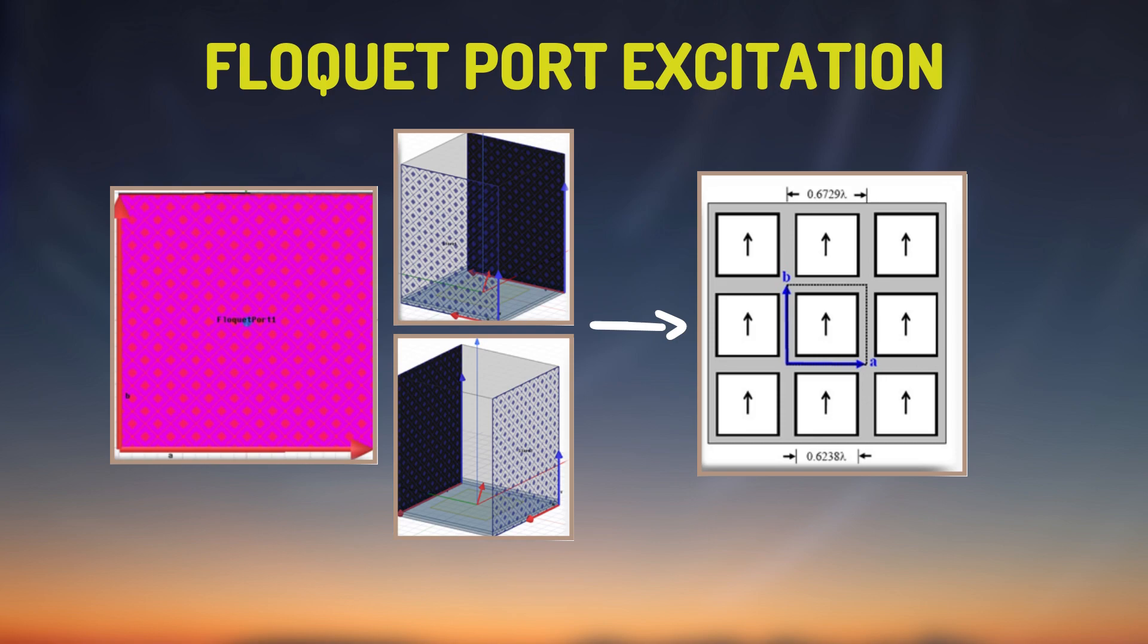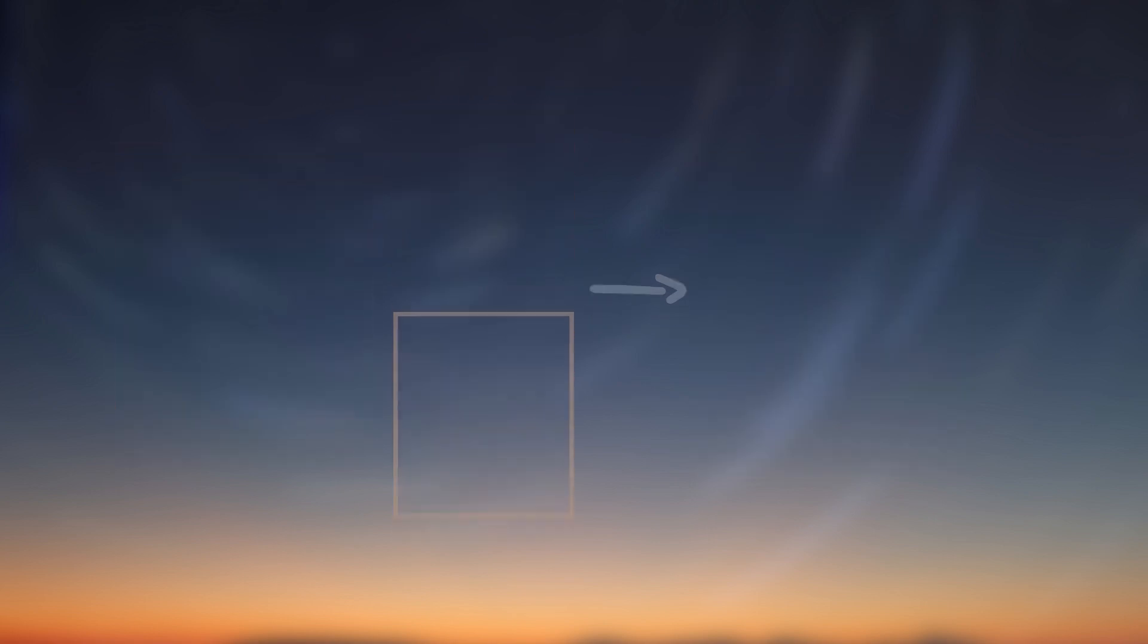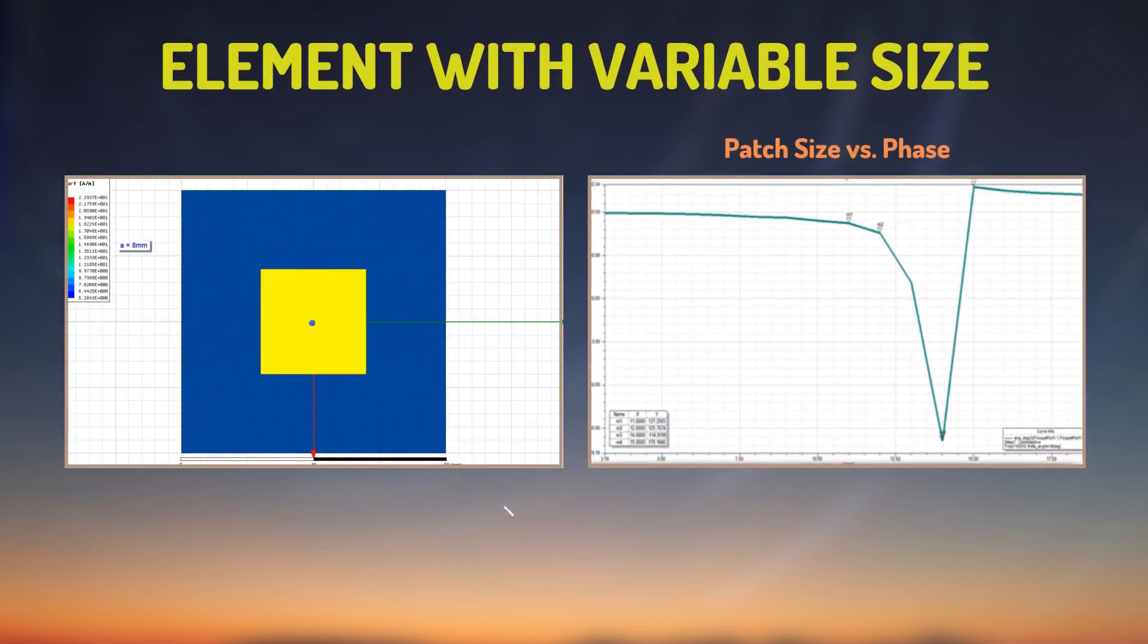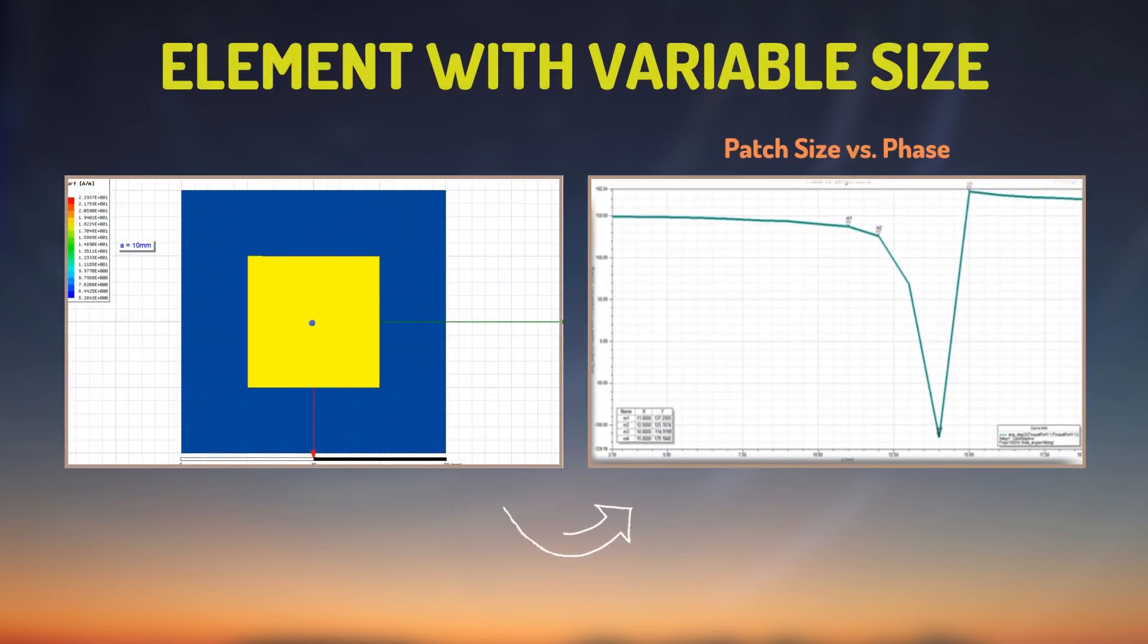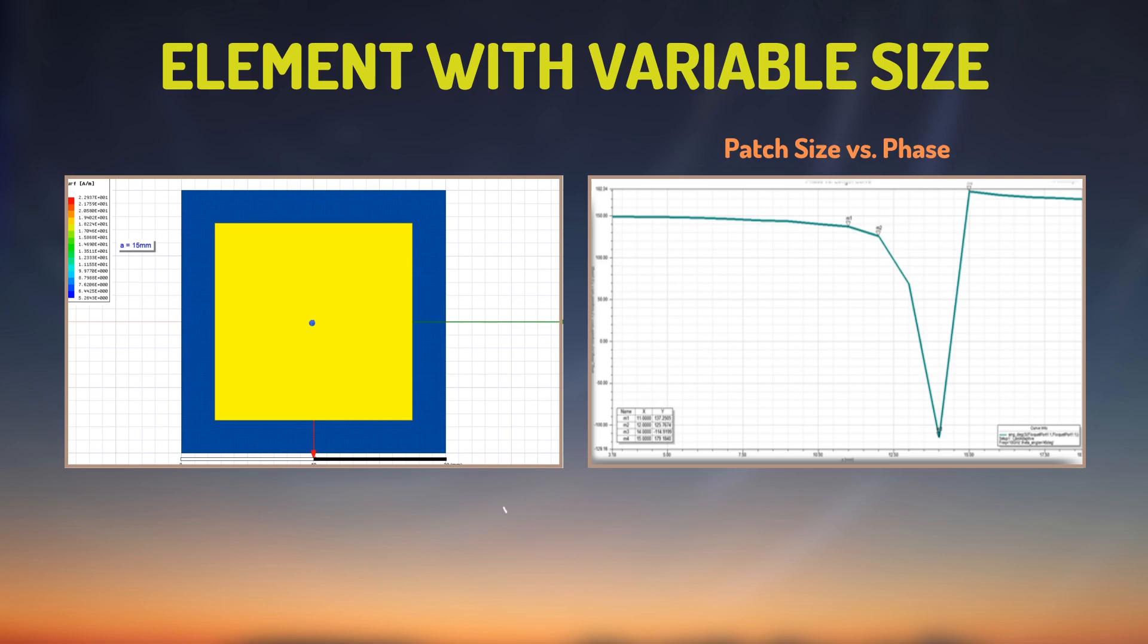In order to observe the phase change with respect to change in element size, FLOG ports are used. This method is based on the idea that phase tuning of an element can be achieved by changing the physical size of the element. Changing the operating frequency of the antenna changes the phase value. Also, it is known that cutoff frequency is related to the size of the patch antenna.